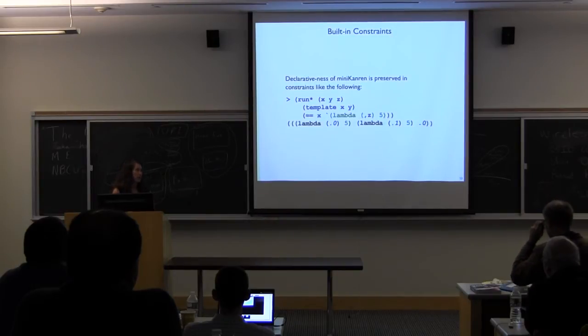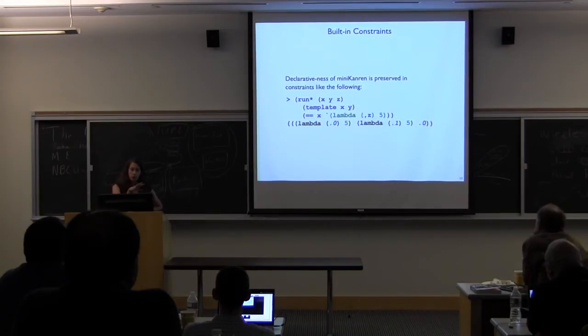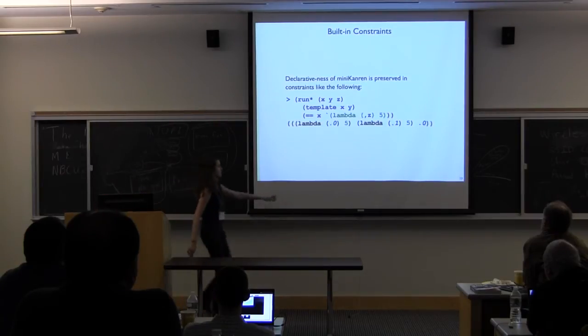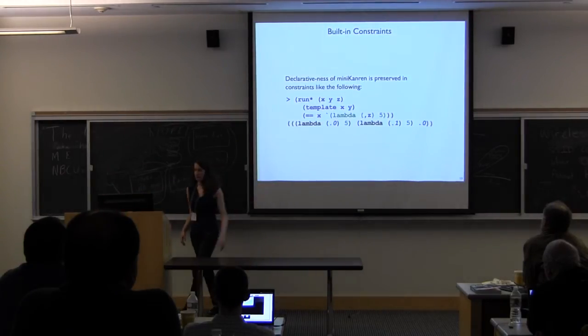You can also use these template constraints, which say that use the variable x as a template for y. And you can later say that x is this lambda term with z as a fresh variable in there. And so you get out what you expect for x. It's this lambda term where this argument is z right here. But this y isn't tied to x or z in any way.